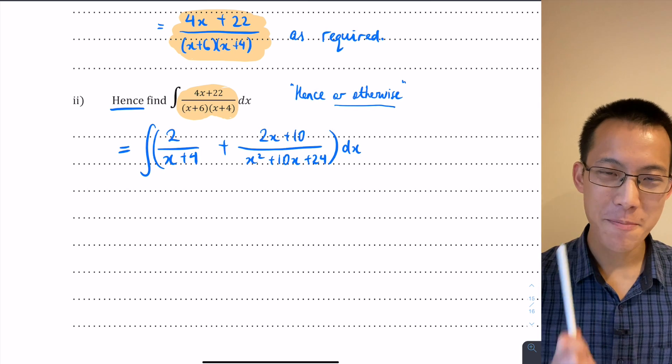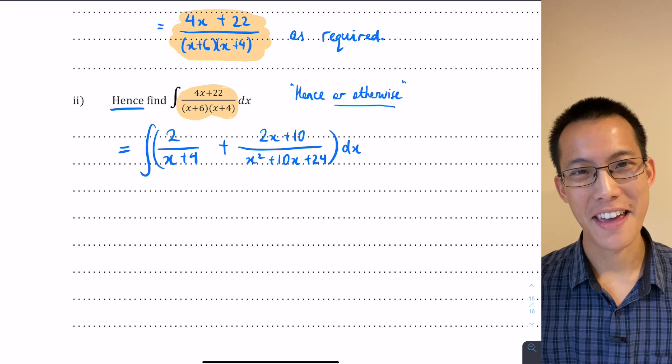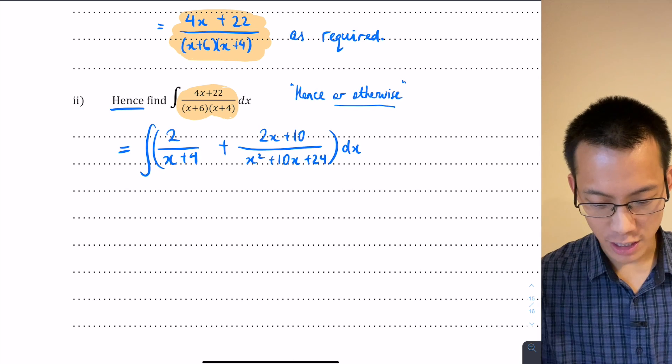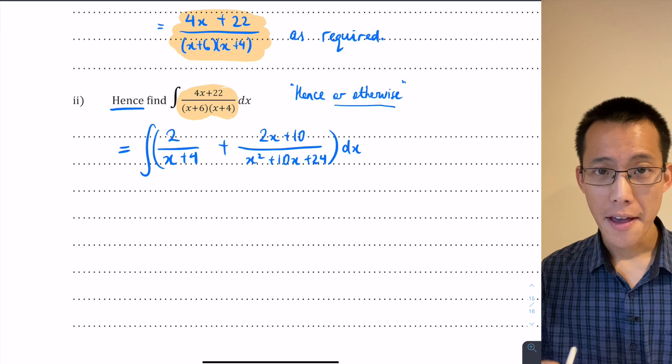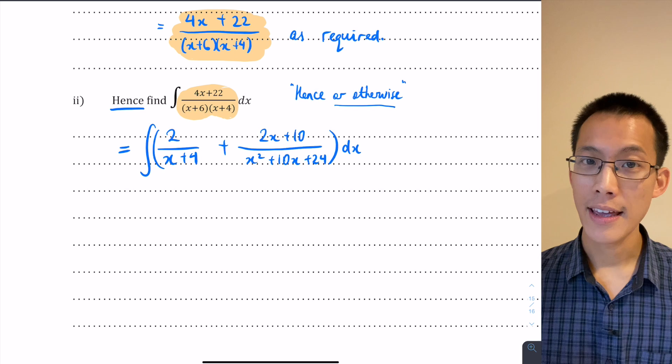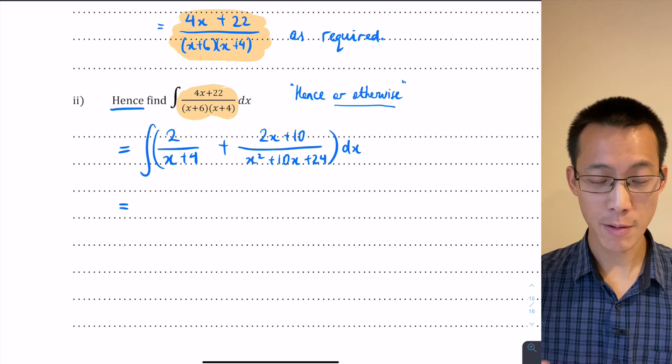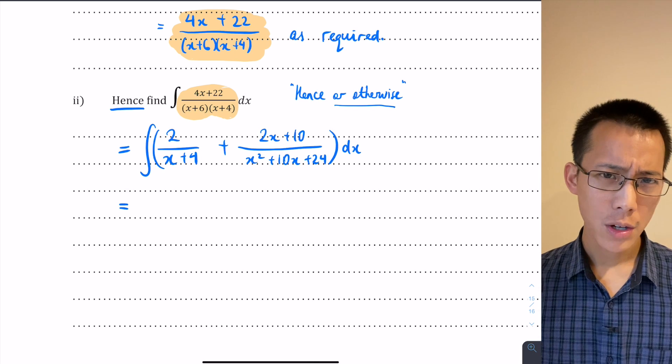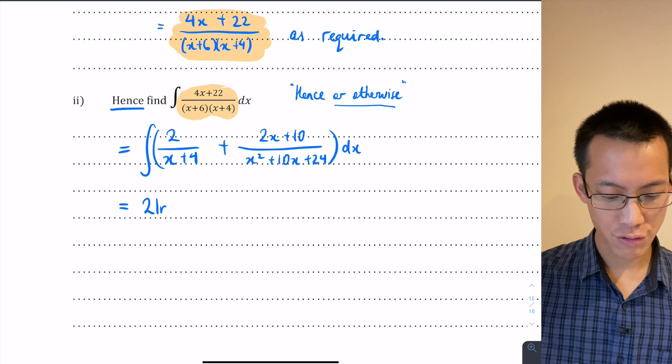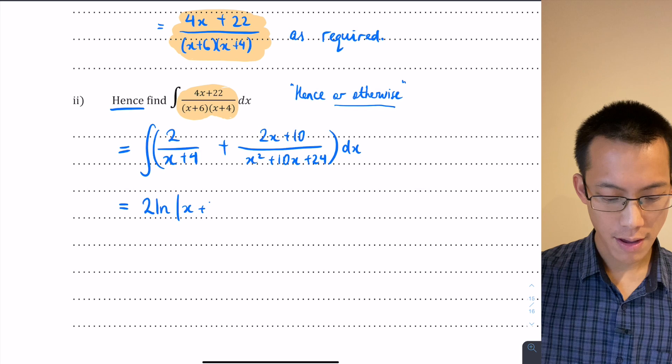Now how does this help at all? Like, it's got more stuff in it. If anything it's messier. It's messier, but it's messier in a way that's helpful. Because even though this is much longer than the thing being asked to integrate in part 2, because it's longer, precisely because it's longer, I can tackle each part individually. So let's have a look at the first expression: 2 over (x+4). What's this equal to when I integrate? It's going to be 2 ln |x+4|.